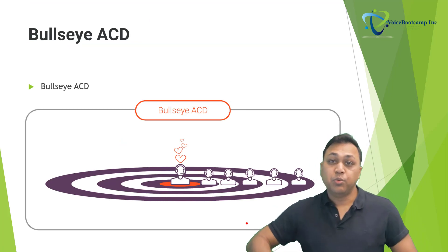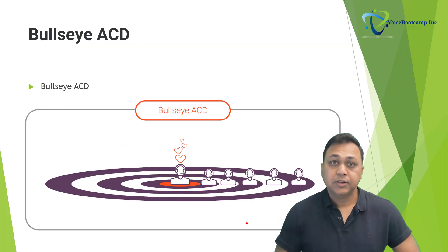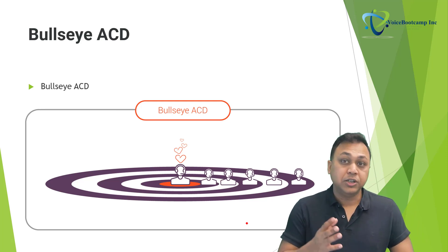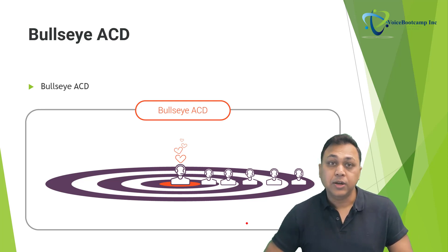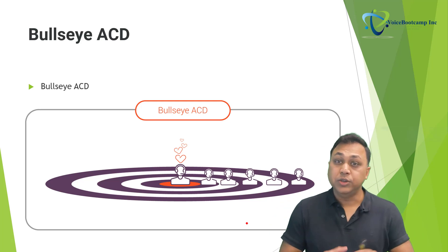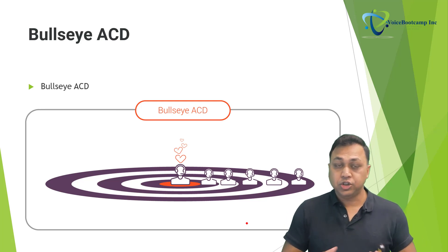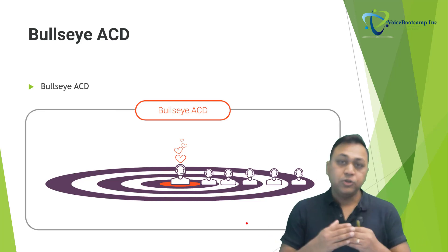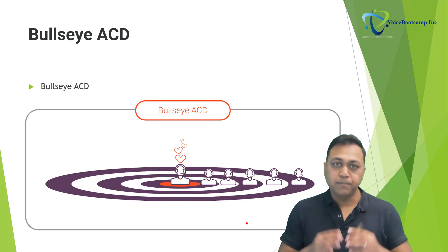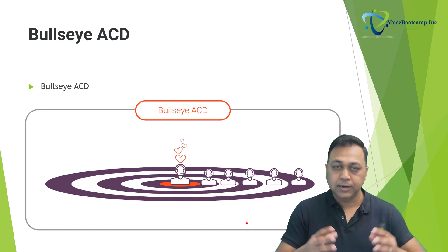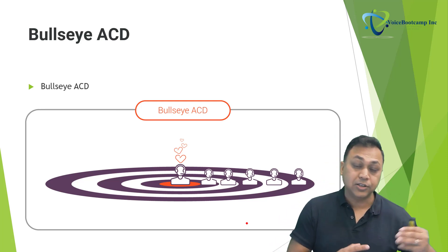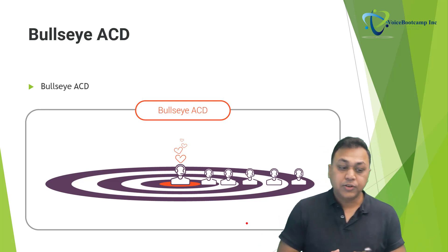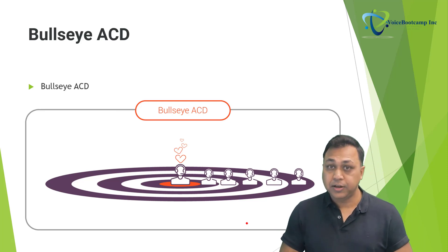Bullseye ACD is a bit more advanced. This routing method targets a subset of agents with specific skills. If none of those agents are available within the configured number of seconds, it will relax the skill set requirements and enlarge the pool. Your goal here is to first select a group of agents who meet within a certain level — say level one. If nobody is available, select agents from level two, then level three, and so on. In bullseye ACD, we use a concept of rings.